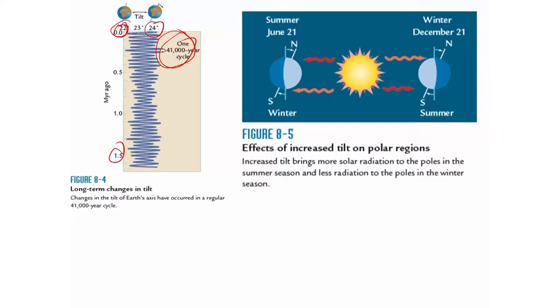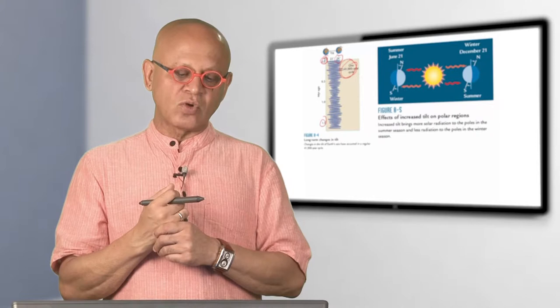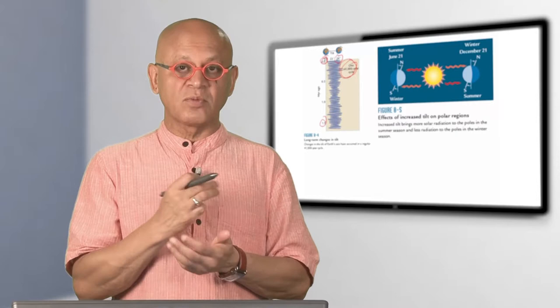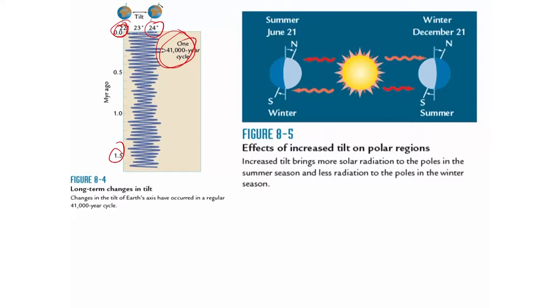These orbital calculations were done by James Croll and Milutin Milanković in the 1800s. Milanković argued that ice ages are related to these orbital parameters and set up all the mathematical calculations. This means we can also calculate the expected changes in orbital parameters into the future—it is perfectly predictable.